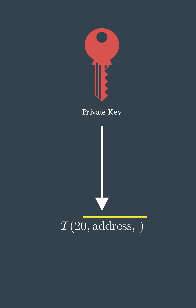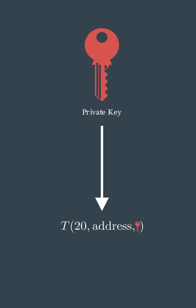The transaction function takes the amount being transferred and the recipient address, and it is then signed by the private key of the sender, ensuring the integrity and authenticity of the transaction before it is broadcasted to the network. Remember, if you lose your private key, you lose access to your funds forever, and if someone steals it, they gain ownership of your funds. Thus, safeguarding your private key is paramount to securing your digital assets.